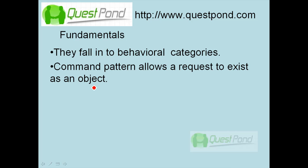The command pattern allows a request or action to exist as a class and object. For example, if you do Ctrl+X or Ctrl+Y, it saves that action into a class or object which you can later retrieve and operate on. You use command patterns when you want to maintain your requests as classes and objects, which keeps the code clean.